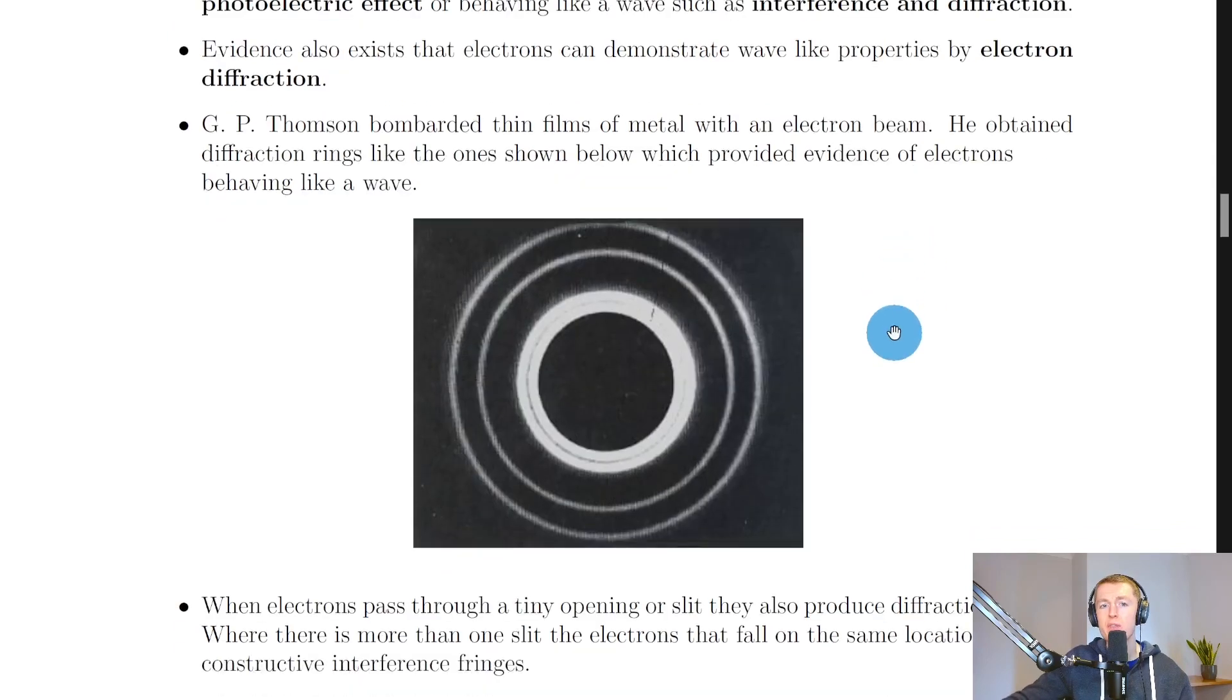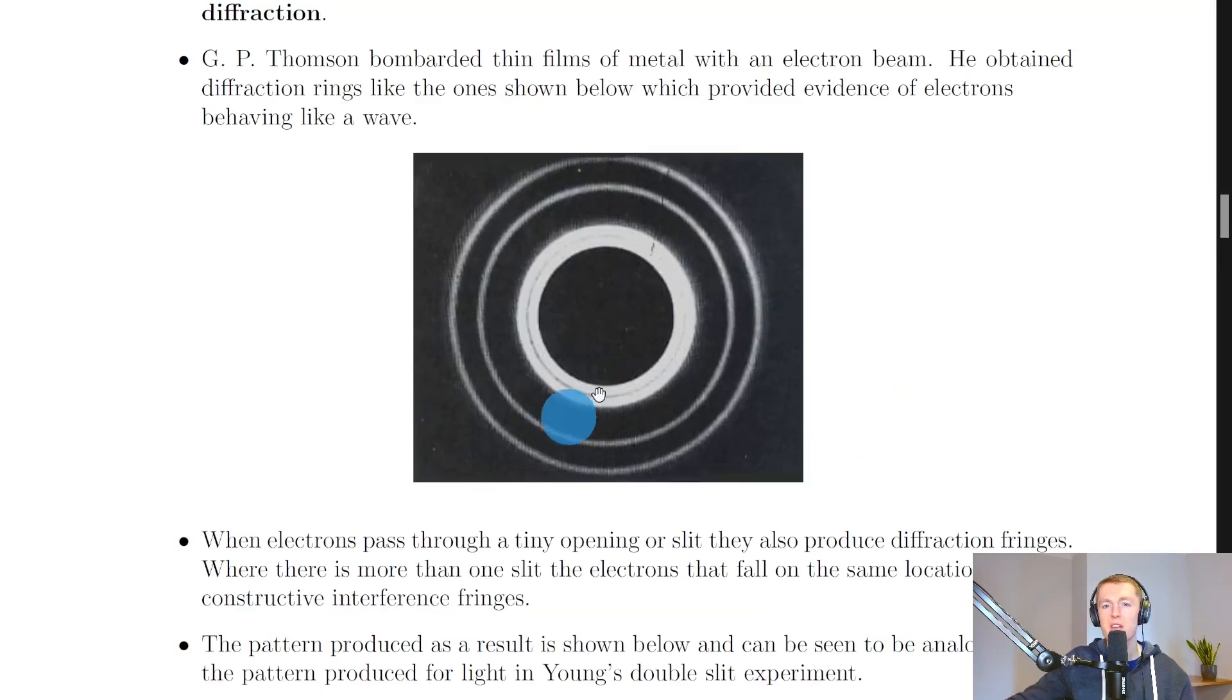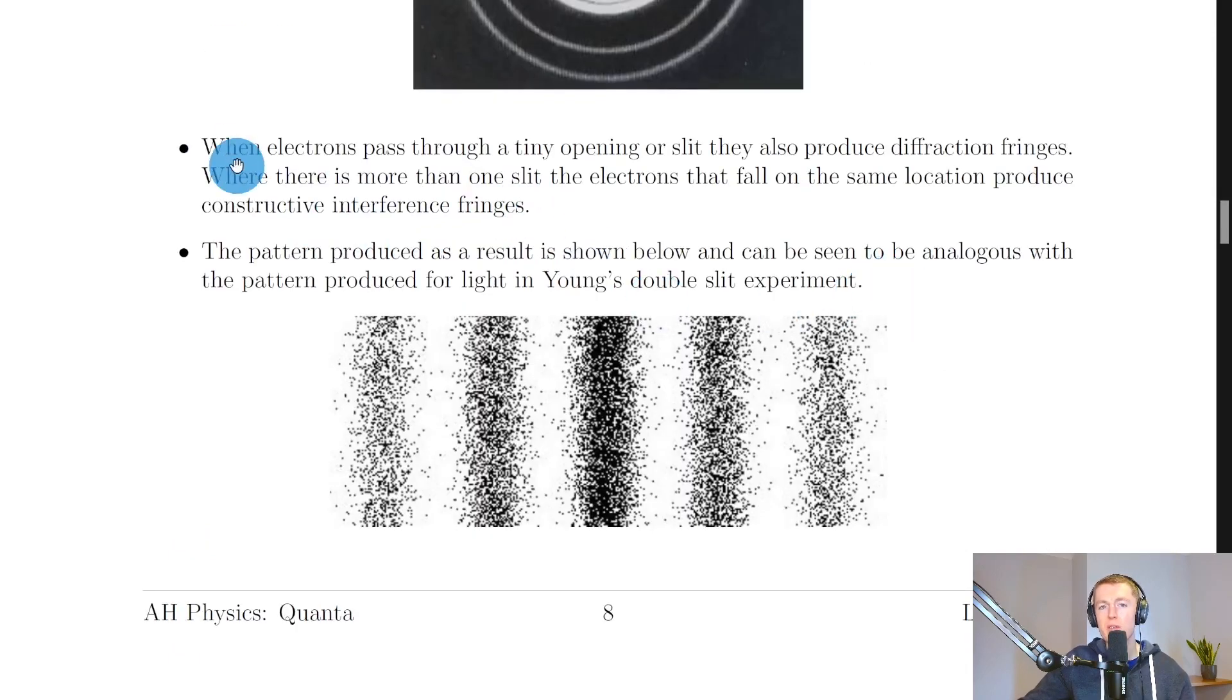In electron diffraction, GP Thompson bombarded thin films of metal with an electron beam. He obtained diffraction rings like the ones shown below, which provided evidence of electrons behaving like a wave. These circular rings in this diffraction pattern are typically what you would see in the diffraction pattern for light, i.e. when you pass light through a circular aperture you would see these rings. But in electron diffraction, when electrons pass through a tiny opening or slit, they also produce diffraction fringes.